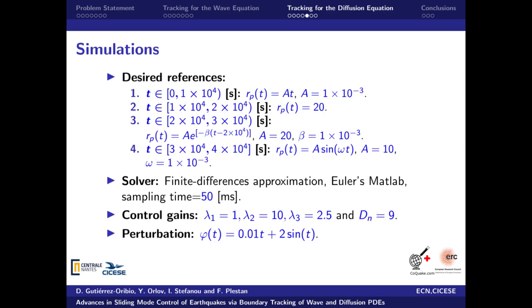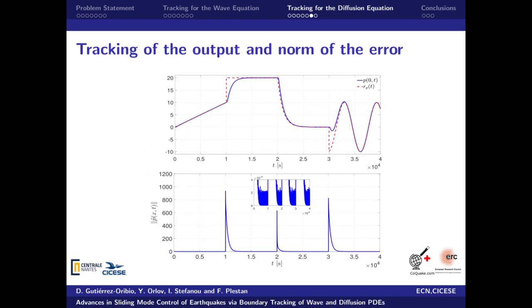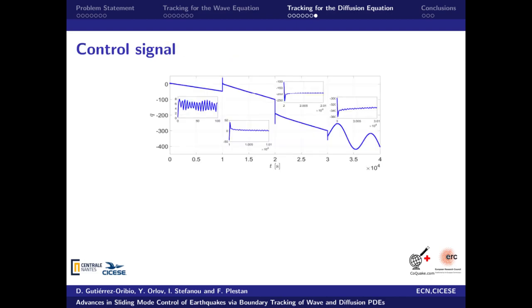We will present now the simulations made over the diffusion equation, where four kinds of references to be followed were selected depending on the simulation time: a linear reference, a constant reference, an exponential reference, and a sinusoidal reference. The diffusion equation was implemented in MATLAB using the finite differences approximation and a sampling time equal to 50 milliseconds. The control was designed according to the presented theorem and the unbounded Lipschitz external disturbance. The tracking at the boundary of interest is obtained, showing how it could be possible to control the pressure applied to the fault by controlling the flux of the well. Furthermore, the norm of the error tends exponentially to zero, even with the change of references to be followed. The control signal generated is always continuous and can perform the tracking over the diffusion equation, suppressing the effect of the external perturbation.